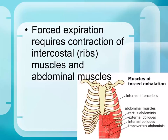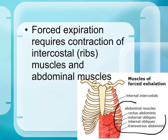Forced expiration requires different sets of muscles. Specifically, the intercostal muscles contract more vigorously than normal, and the abdominal muscles activate — the rectus abdominis, external obliques, internal obliques, and transversus abdominis — providing greater force to push air out of the lungs.